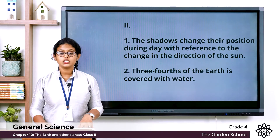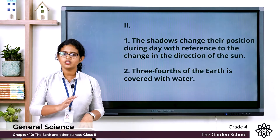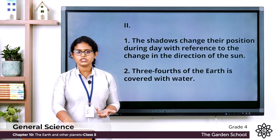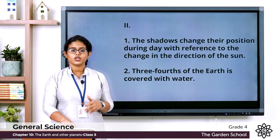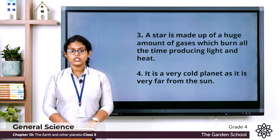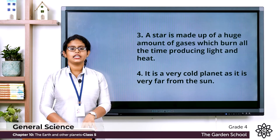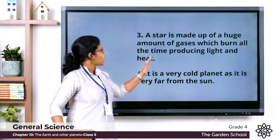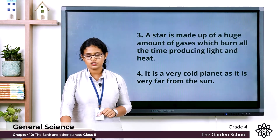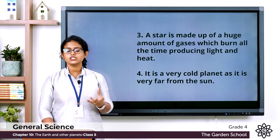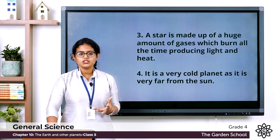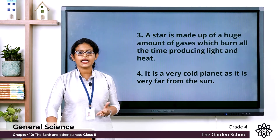Second: The earth is called the water planet — reason: three-fourths of the earth is covered with water. Third: A star produces light and heat — reason: a star is made up of a huge amount of gases which burn all the time, producing light and heat.